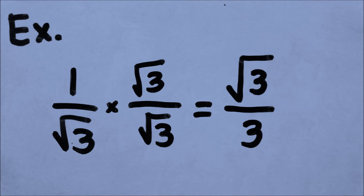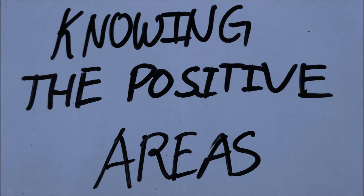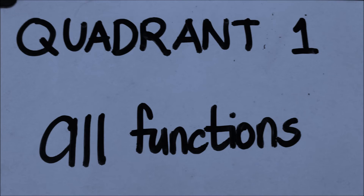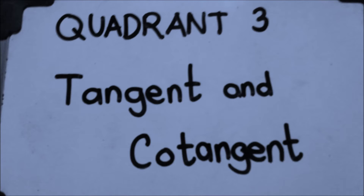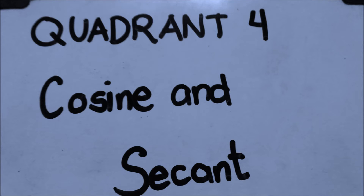Let's start this tutorial by first knowing the positive areas. In quadrant 1, all functions are positive. In quadrant 2, only sine and cosecant functions are positive. In quadrant 3, only tangent and cotangent functions are positive. And last, in quadrant 4, only cosine and secant functions are positive.